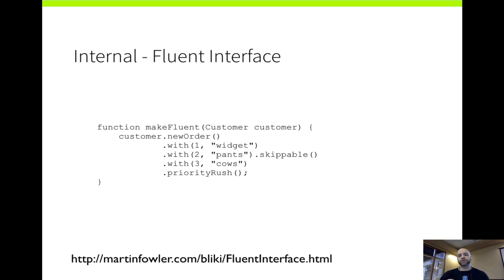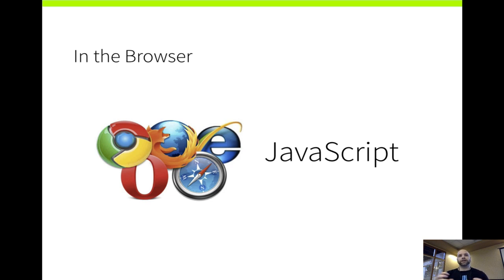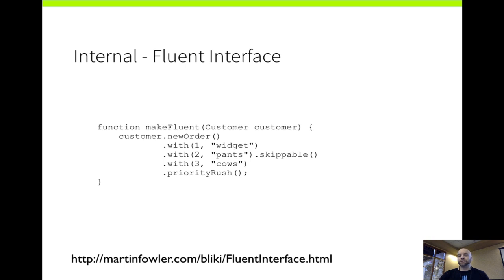The fluent interface captures all of the business domain concepts. The keywords you see here: we added a new order method onto the customer, we added a 'with' — for a line item, one widget, two pants, three cows — and the second one with two pants is skippable. These are all methods and they all chain. Chainability is not the definition by itself — it has to do with the fact that the business domain concepts, the language constructs and semantics of what we're reading, have to do directly with the business domain and business logic.